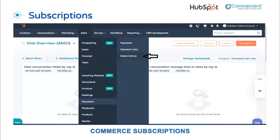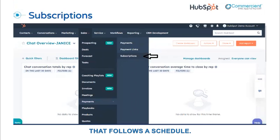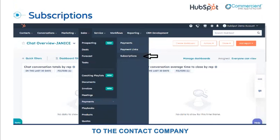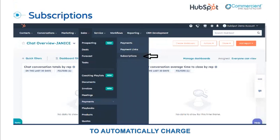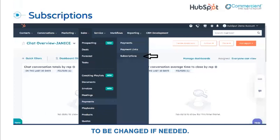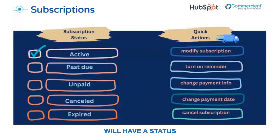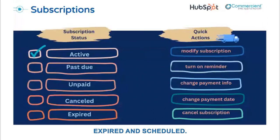The last big part of Commerce Hub: subscriptions. For simplicity's sake, a subscription is a recurring payment that follows a schedule — for instance, your cable service is a subscription, you pay the bill monthly. Subscriptions are recurring payments associated to the contact, company, deal, and payment record associated to the transaction. On the payment schedule set forth, HubSpot will automatically charge the customer using the same payment method as previously used. HubSpot also allows for payment methods to be changed if needed. Subscriptions will have a status that gives you immediate insights: active, unpaid, canceled, expired, and scheduled.